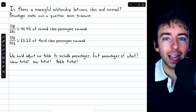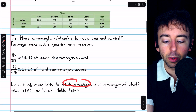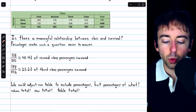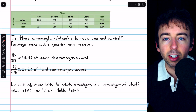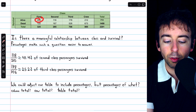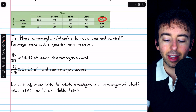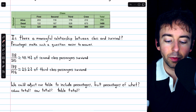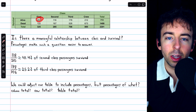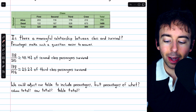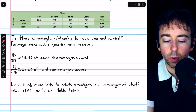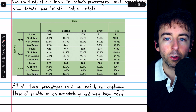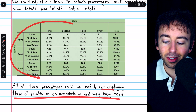Since percentages make these questions easier to answer, we may think about including percentages in our two-way table, but it's not obvious how that should be done. For the 203 first-class passengers who survived, there are three choices: divide by 711 to get a percent of the alive passengers, divide by 325 to get a percent of first-class passengers, or divide by 2,201 to get a percent of all people aboard the Titanic. So which should we use — the row total, the column total, or the table total? All of these percentages could be useful depending on what we're trying to study, however displaying them all results in a pretty overwhelming table.